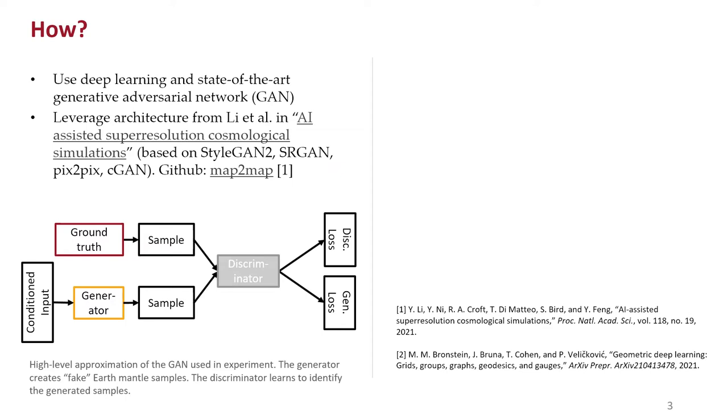This is an example, sort of a high-level approximation of the GAN that we use in our experiment. Of important note, we condition the input to the generator using a downsampled sample of the data. That's important in order to achieve a partially deterministic result, which is needed for the surrogate model.